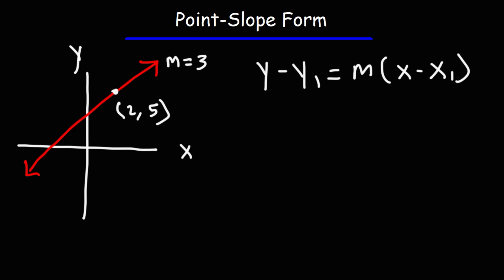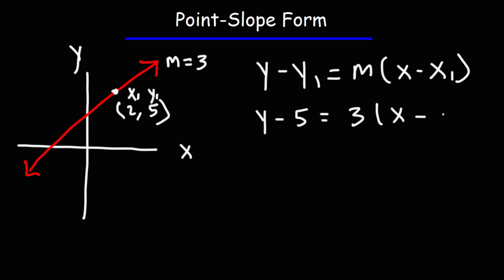With this information, you can write a linear equation in point-slope form. Our x1 value is 2, and our y1 value is 5. So we can replace y1 with 5, m — the slope — is 3, and we can replace x1 with 2. So this is our linear equation in point-slope form. All we need to write it is the slope and a point.